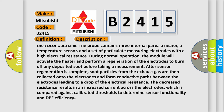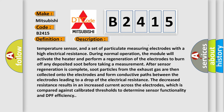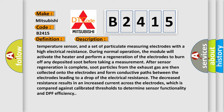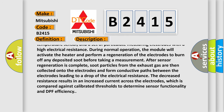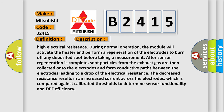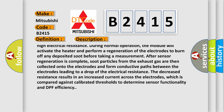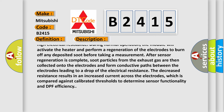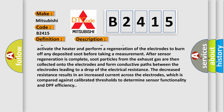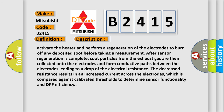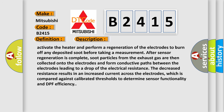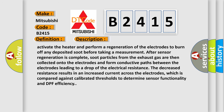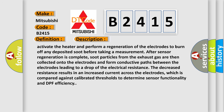In normal operation, the module will activate the heater and perform a regeneration of the electrodes to burn off any deposited soot before taking a measurement. After sensor regeneration is complete, soot particles from the exhaust gas are collected onto the electrodes and form conductive paths between them, leading to a drop in electrical resistance. The decreased resistance results in an increased current across the electrodes, which is compared against calibrated thresholds to determine sensor functionality and DPF efficiency.